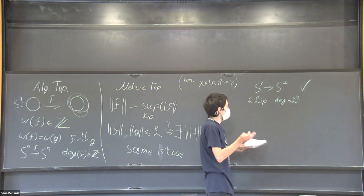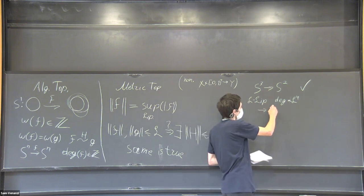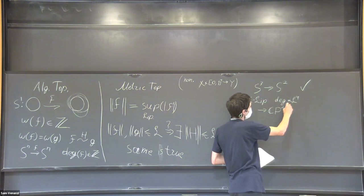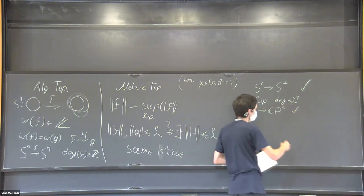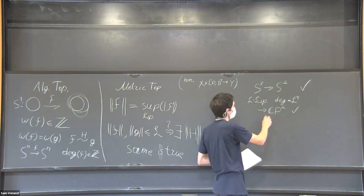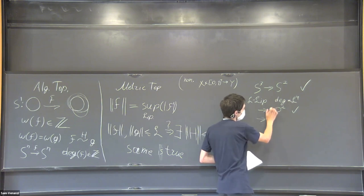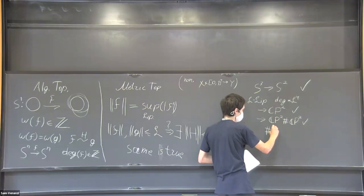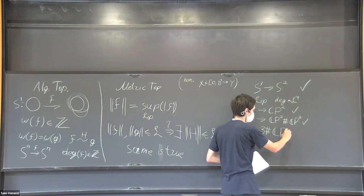And of course we can consider some other things. For example, you can attach one four-cell to this S² to get CP² and it still holds. It's a little bit trickier, but the same machinery works. You can even take connected sums of CP²s.